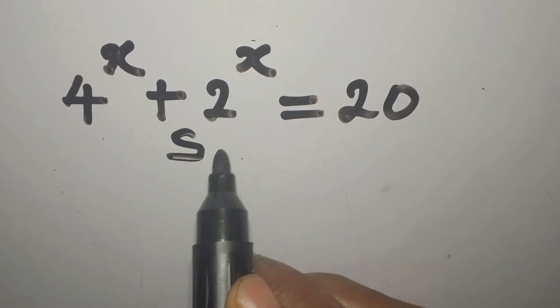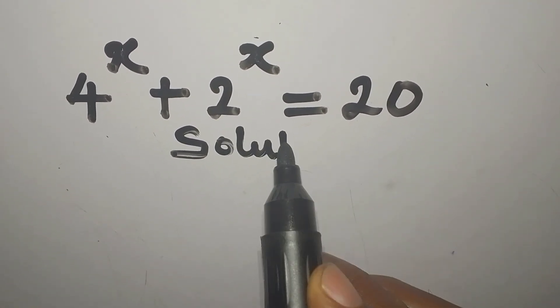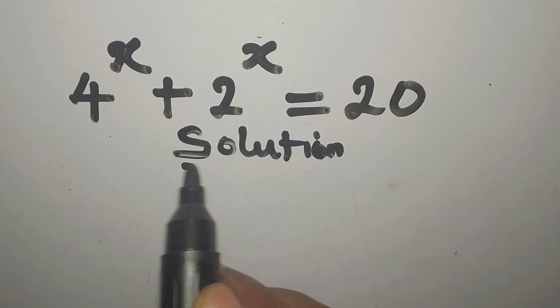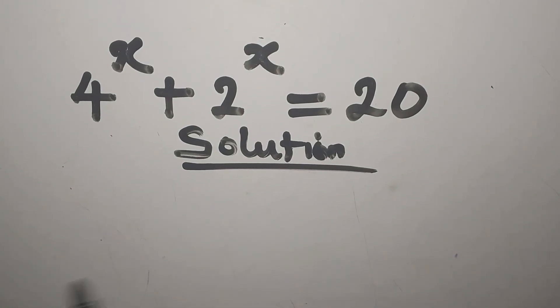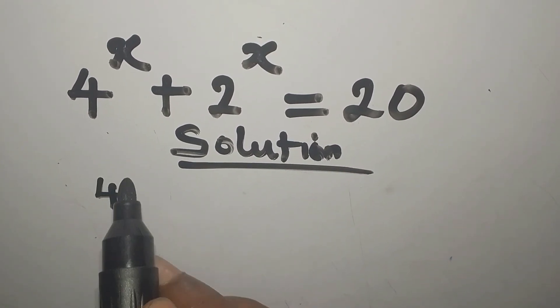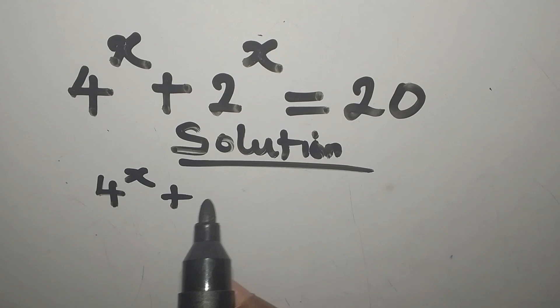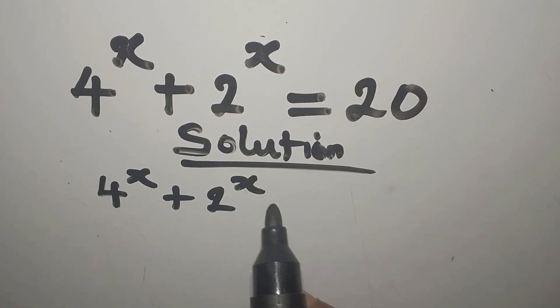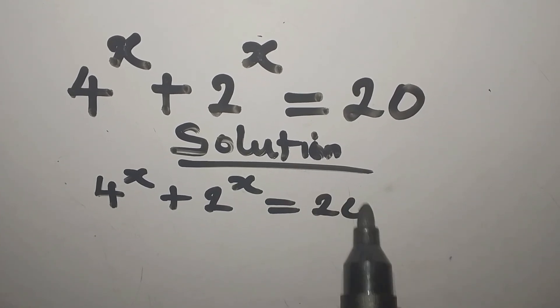Hello everyone. Okay, so let's provide the solution to this equation: 4 to the power of x plus 2 to the power of x equals 20.